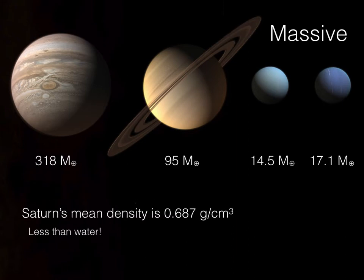Another characteristic is that these planets are all very massive — they just have a lot of stuff. Jupiter is more massive than all of the other planets in the solar system combined. In fact, you can add up all the other planets, all the asteroids, comets, and dwarf planets, and you still come up short compared to Jupiter's overall mass. The only thing more massive in the solar system than Jupiter is the sun itself.